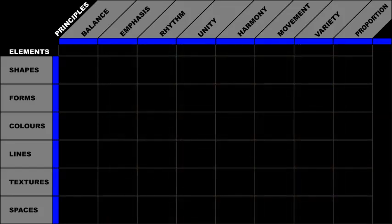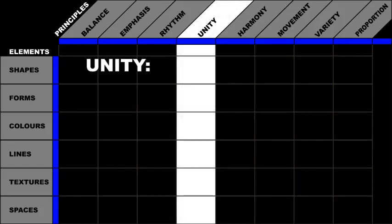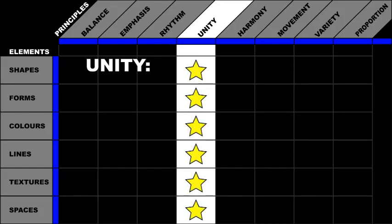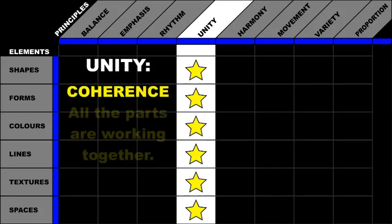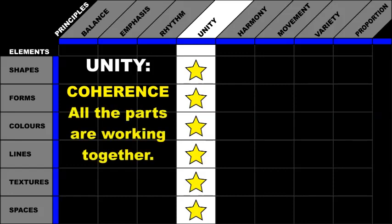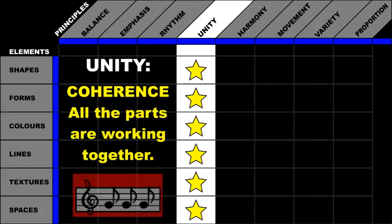Let's take a closer look at the principle of unity. Unity is the coherence of a work of art that gives the viewer the feeling that all the parts of the artwork are working together. As I explained in an earlier video, the principle of unity can be compared to singers who are all singing the same notes at the same time as they sing one song together.